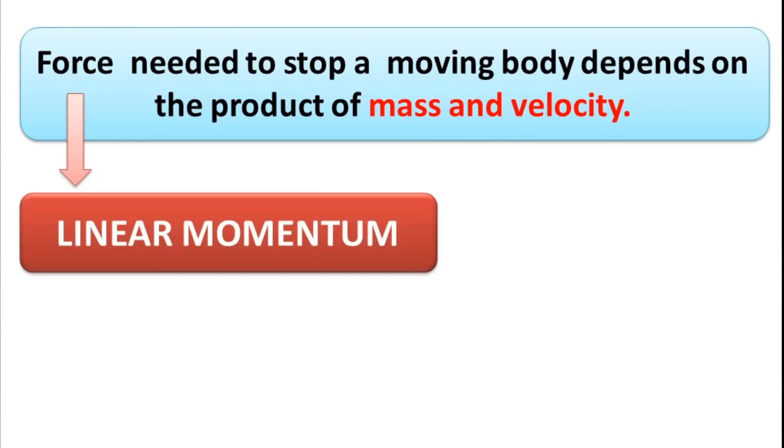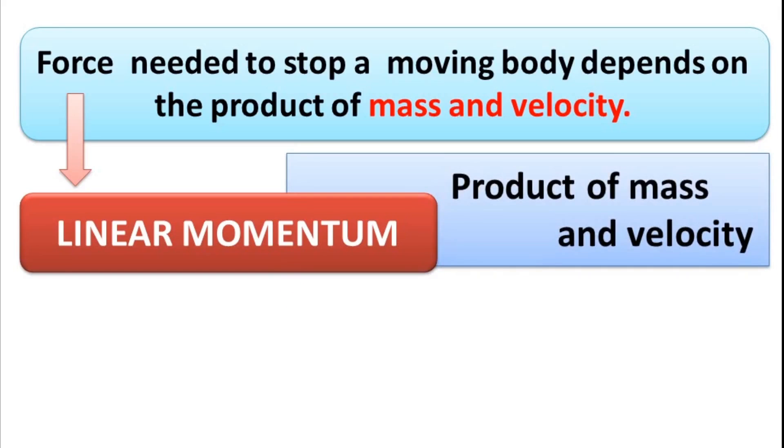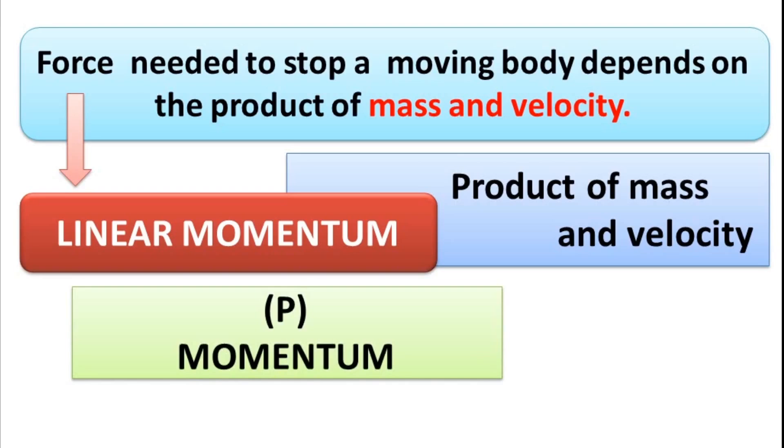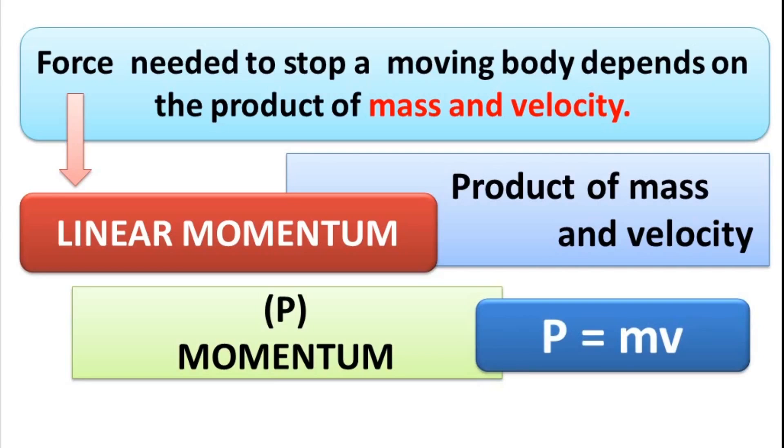So, what is linear momentum? Force that is needed to stop a moving body in a given time. Or we can also define linear momentum as linear momentum of a body is the product of its mass and velocity. Linear momentum of a body is denoted by a letter P. Sometimes, instead of linear momentum, we can also use the word momentum. Momentum is a vector quantity. That means momentum has both magnitude and direction.